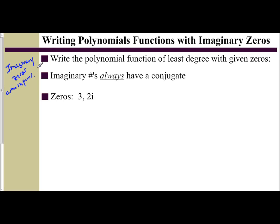If I give you one imaginary zero, we have to use the conjugate to find the other. In the first example, we're given the zeros 3 and 2i. I see I have only one imaginary zero, so I need to create the other by finding the conjugate. The conjugate of 2i is negative 2i. Now I have three zeros — one real and two imaginary — so the degree should be 3.